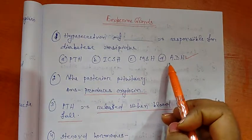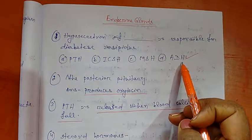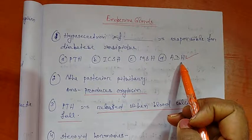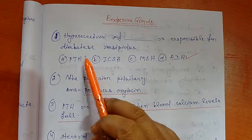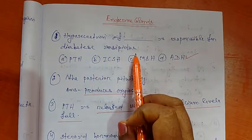The right option is ADH, that is antidiuretic hormone or vasopressin, which less secretion of this hormone is responsible for diabetes insipidus.